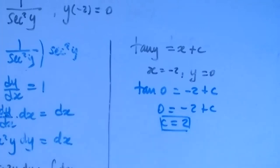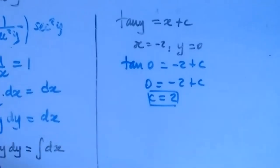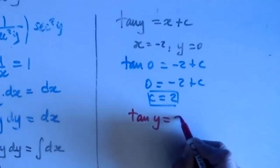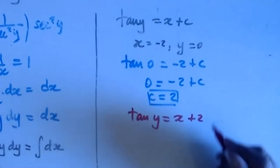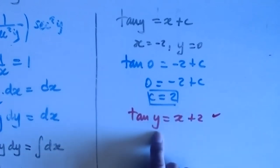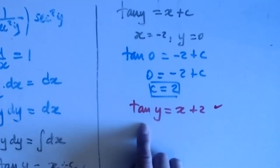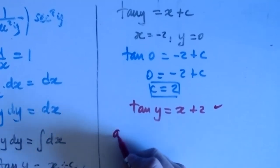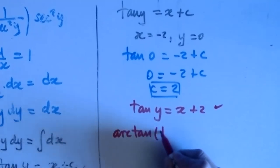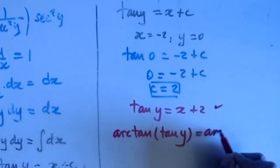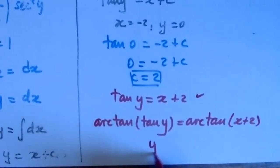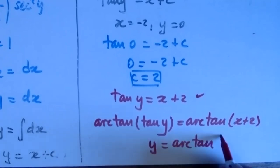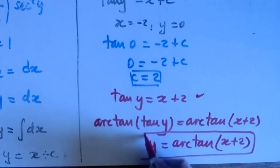That's the value of the constant. I plug it back: tangent(y) = x + 2. Now I need to solve for y explicitly — this solution is implicit. To cancel the tangent, I apply the inverse function arctangent to both sides: arctan(tan(y)) = arctan(x + 2). These cancel, giving y = arctan(x + 2). That is the final answer.